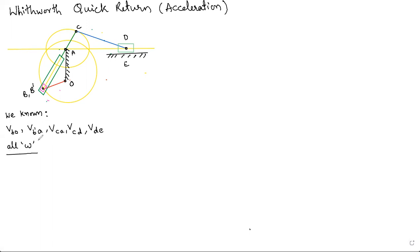From the previous video, all omegas are known. Now we'll use that data. The key logic to remember is: whenever a link is rotating, it will have two components — one radial and one tangential. And if a slider is sliding on a rotating link, it will be exposed to the Coriolis component of acceleration.